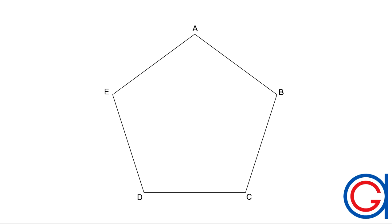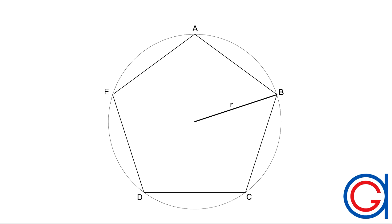So the first step is we are going to draw a regular pentagon. There are two methods to drawing a regular pentagon. One method is by knowing the length of one side — click the following link if you want to see a full description on how to draw it. The second method is drawing a pentagon inscribed in a given circle — click this link for a full description on how to draw this type.